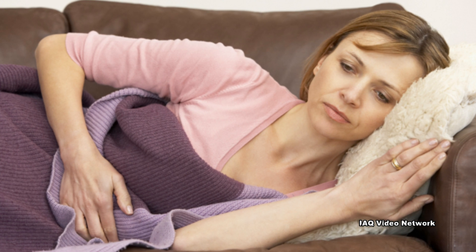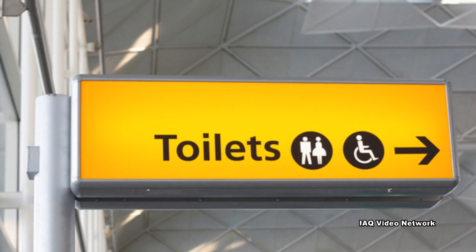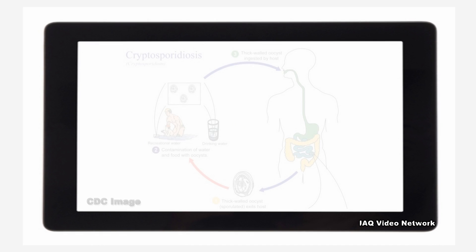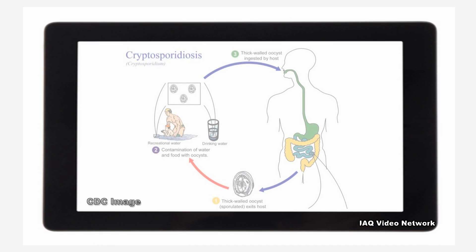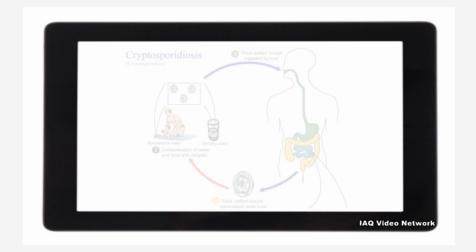An infected person or animal sheds the parasites in their stool. In fact, millions of parasites can be released in a bowel movement from an infected human or animal. The parasite is protected by an outer shell that allows it to survive outside the body for long periods of time and makes it very resistant to chlorine-based disinfectants.